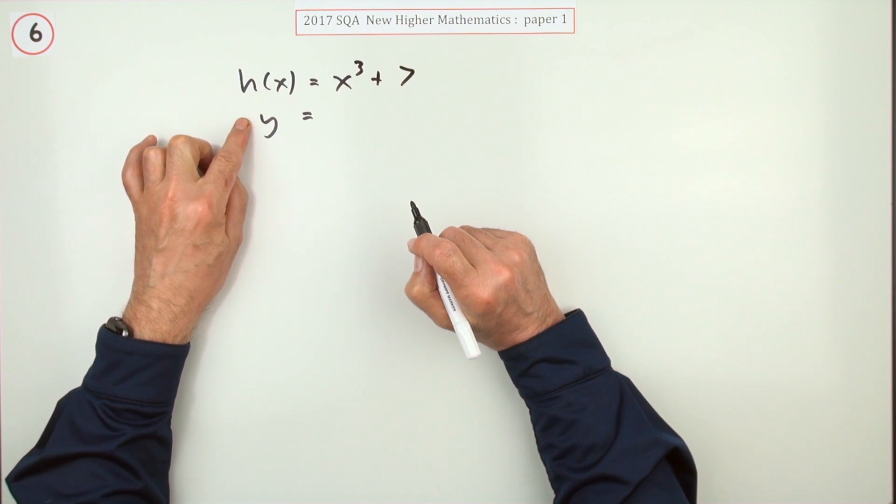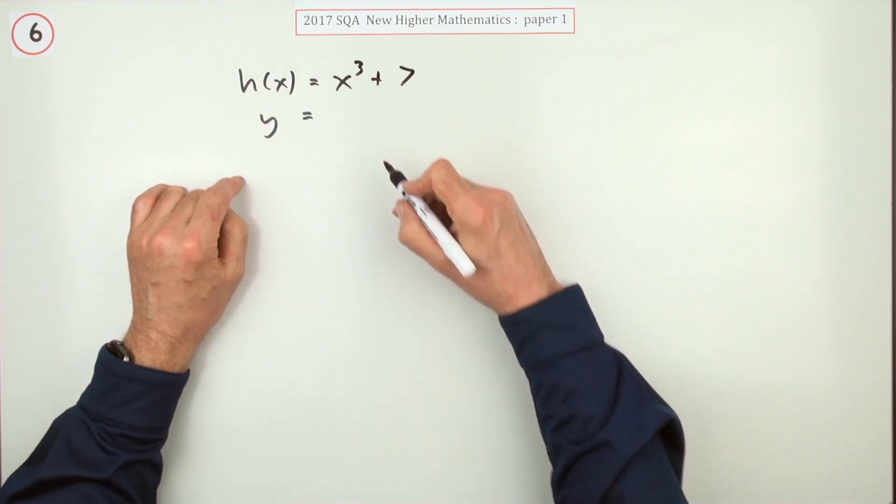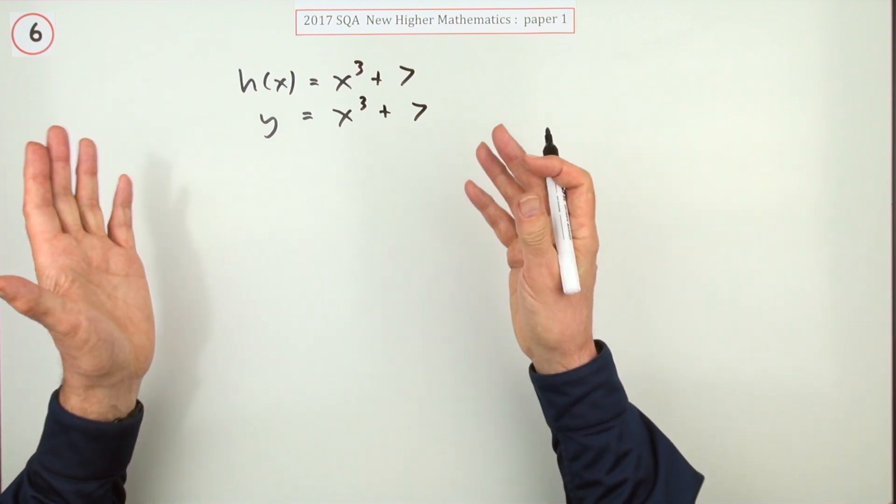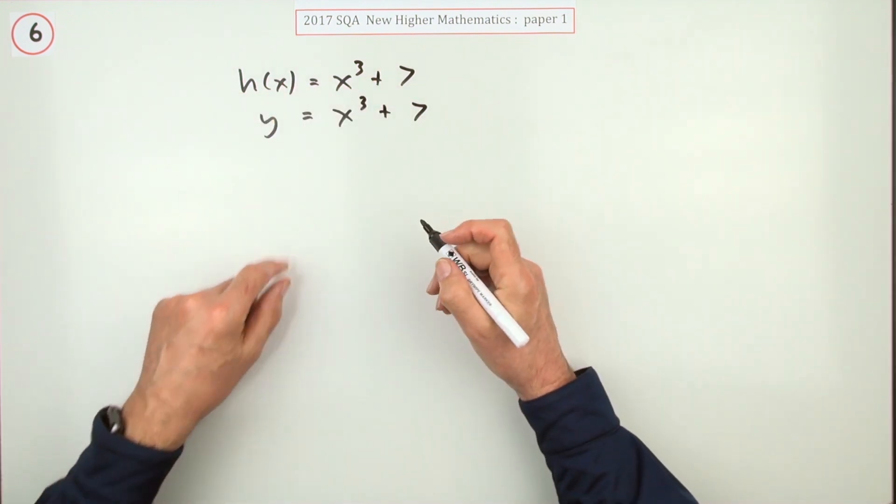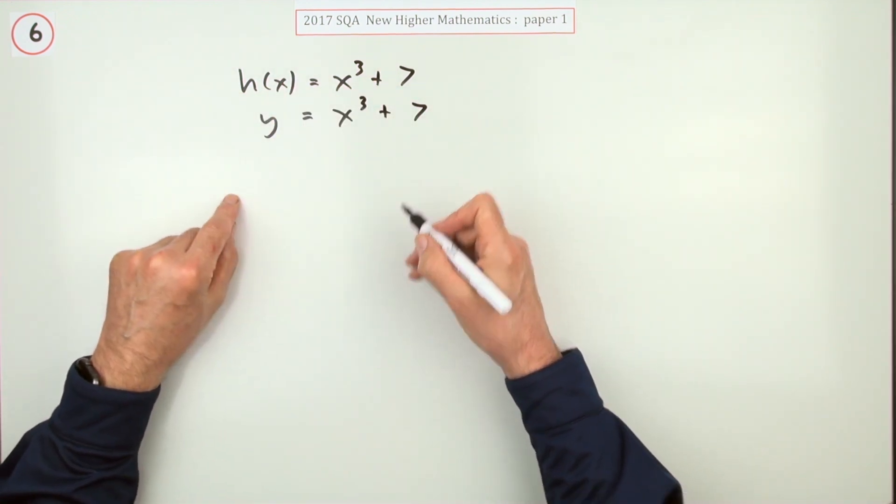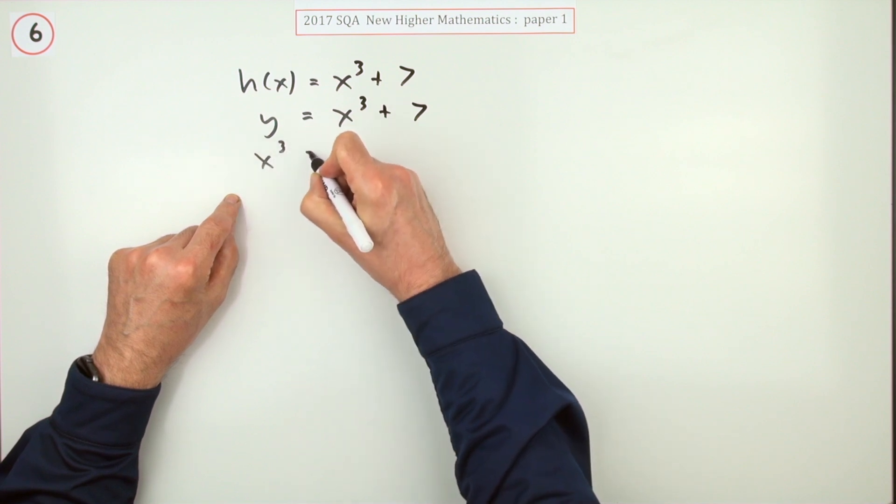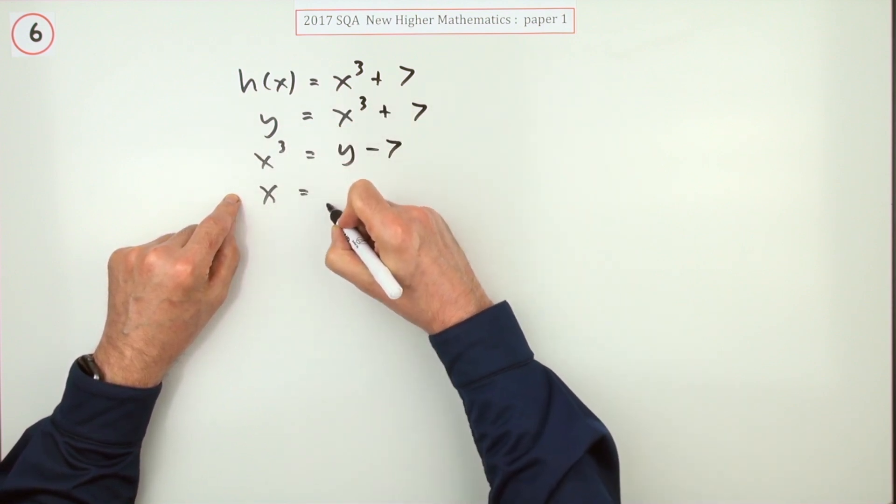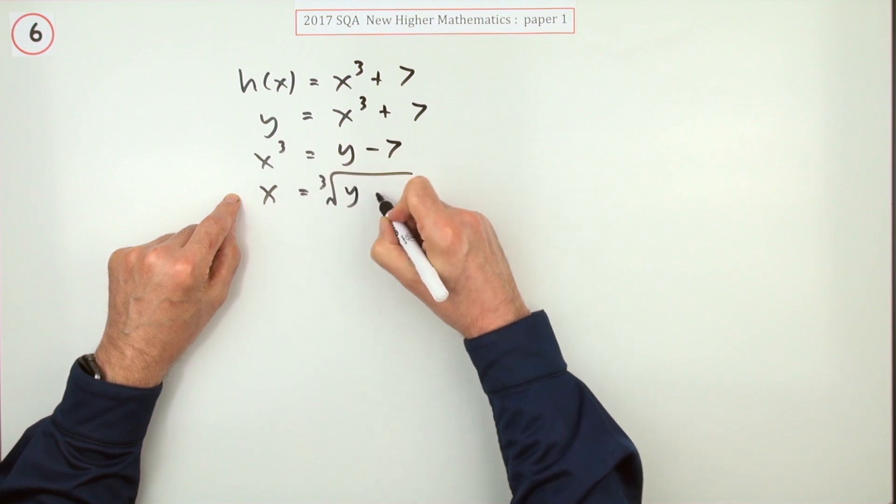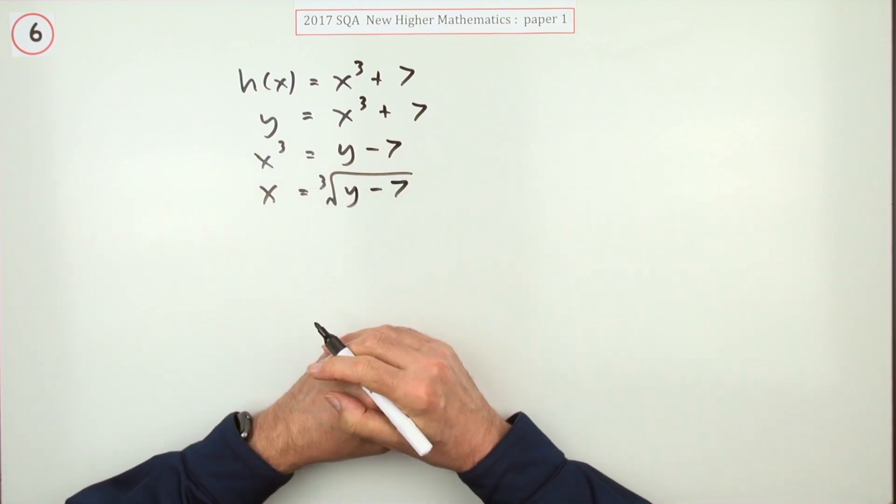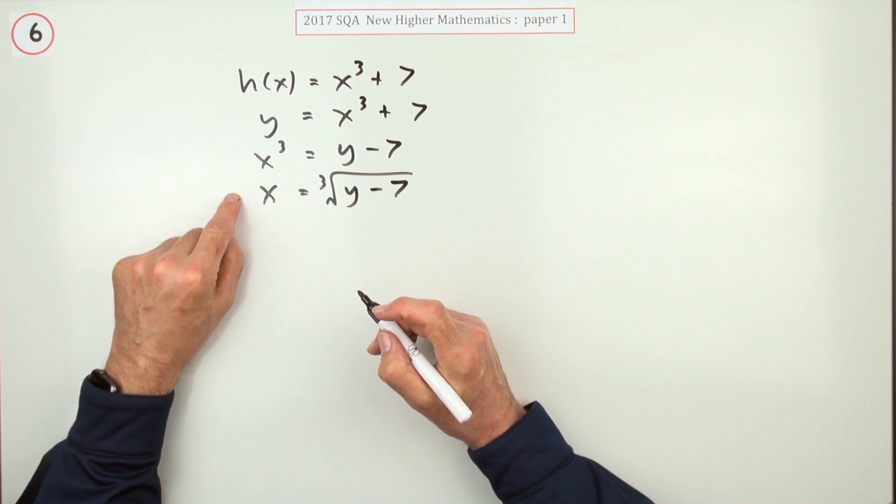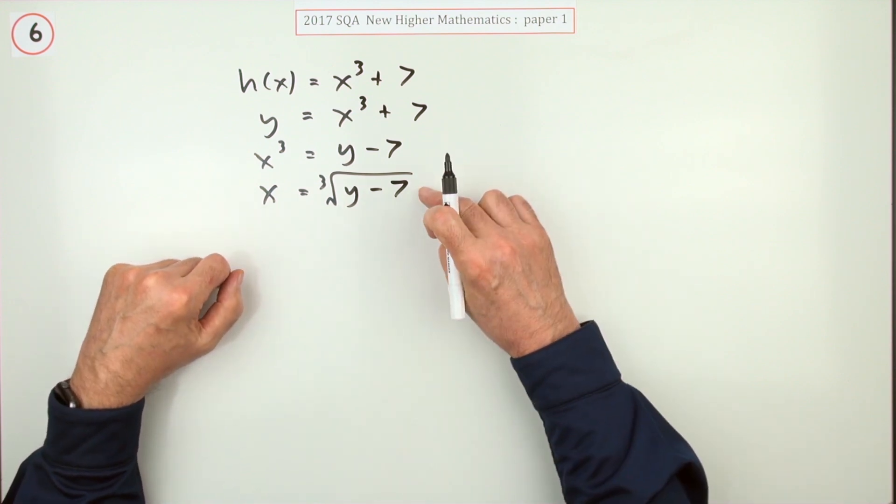Normally call the answer y, so the result of this will be called y. So y would be given by x cubed plus 7. So for the inverse, rearrange it so I can have the input. So rearranging that would be x cubed equals y minus 7, and then x would be the cube root of the whole lot, the cube root of y minus 7.